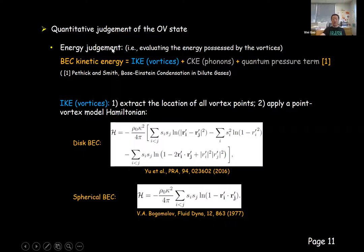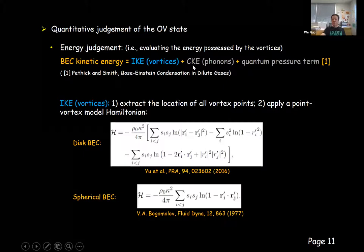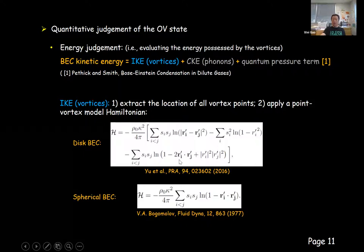There are ways to make a more quantitative judgment about whether Onsager vortices ever appear in the BEC or not. Here we adopt the energy judgment. The total kinetic energy of the BEC in the GPE framework can be decomposed into three contributions: the incompressible kinetic energy associated with the flow induced by the vortices, the compressible kinetic energy due to phonons or sound waves, and the quantum pressure term. To calculate the incompressible kinetic energy associated with the vortices, we first extract the location of all vortices in the GPE simulation and then apply a point vortex Hamiltonian to calculate this part of the energy.